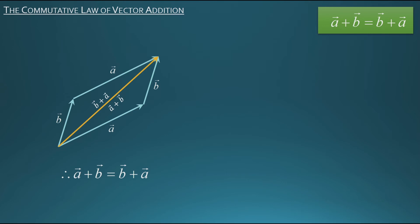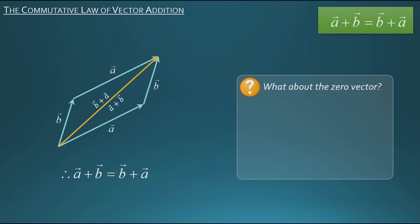One thing we should consider is what happens if one of our vectors is the zero vector. Would that change things? Well it's a little tough to draw the zero vector since it has no magnitude and no direction. But it turns out we don't need to draw it in order to prove that the commutative law still holds. All we need to do is think about what happens if I start with a vector a and I add the zero vector to it. Well remember that the zero vector has no magnitude and no direction. So if you were to add it to a vector a, nothing would change.